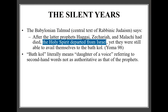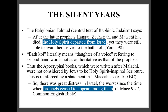The Jews also refer to that period as a time when no inspired Scripture was written. The Babylonian Talmud says: 'After the latter prophets Haggai, Zechariah, and Malachi had died, the Holy Spirit departed from Israel.' Yet they were still able to avail themselves of the bat kol — the daughter of a voice — referring to secondhand works not authoritative like the prophets. Even Maccabees itself, written during the intertestamental period, says: 'There was great distress in Israel, the worst since the time when prophets ceased to appear among them.' So the book of Maccabees acknowledges there were no longer prophets in Israel at that time.